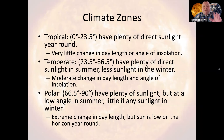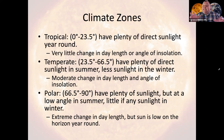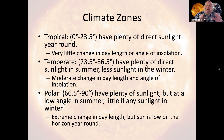A tropical climate zone has plenty of direct sunlight year-round, and therefore has very little change from season to season. Temperate climate zones have plenty of direct sunlight in the summertime, not as much in the wintertime, so there's a noticeable change.